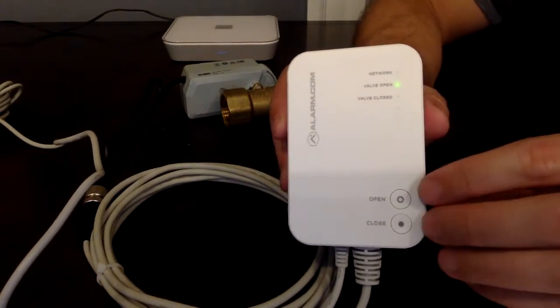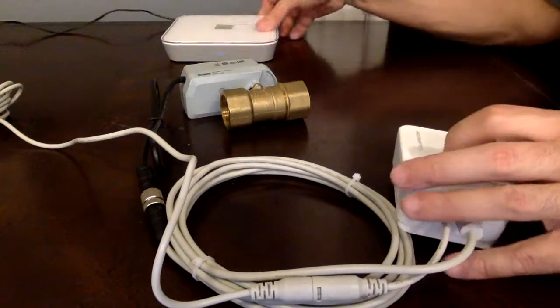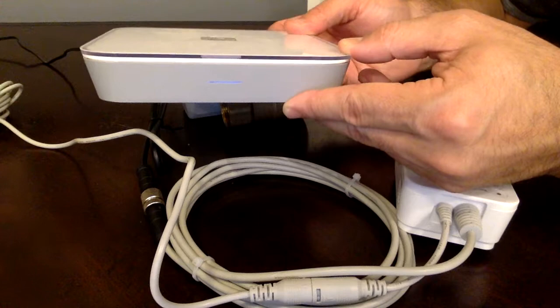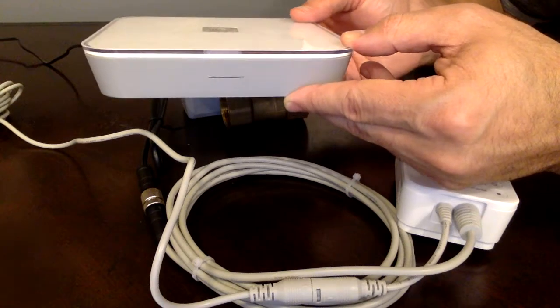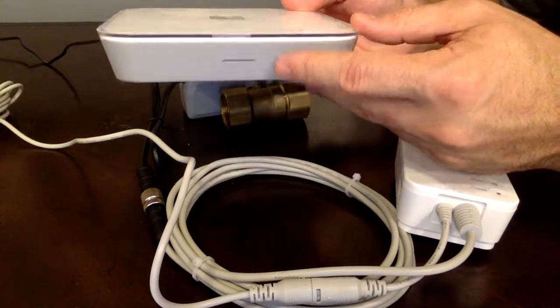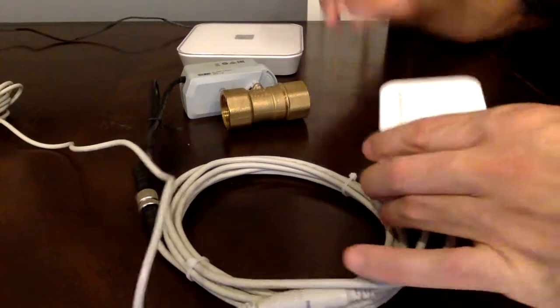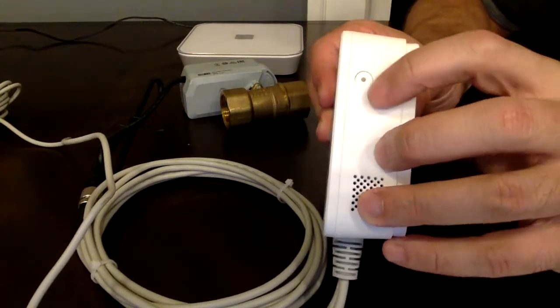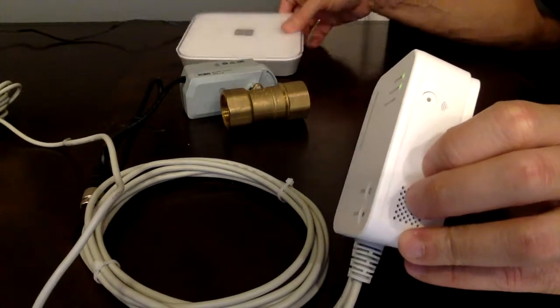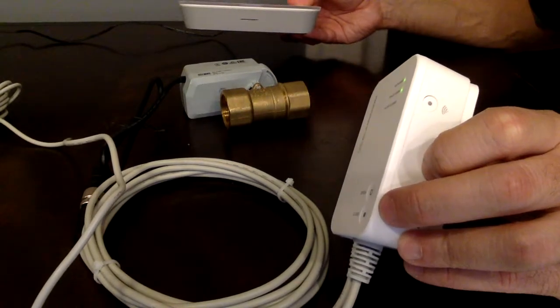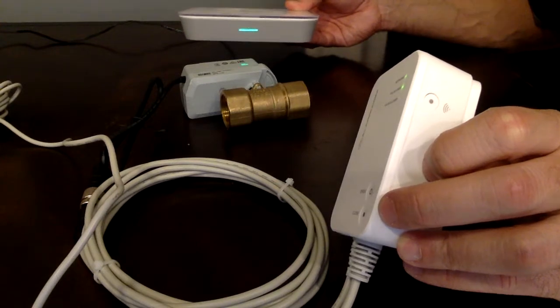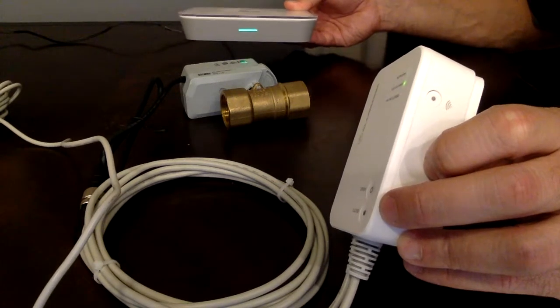If I wanted to pair this to my Z-Wave network I would take my modem and press the pairing function. In this case it's a single push to the link button. It will slowly flash green. Then I press the Z-Wave button here on the side. When I press that it will start beeping faster. That final beep indicates a successful pairing.